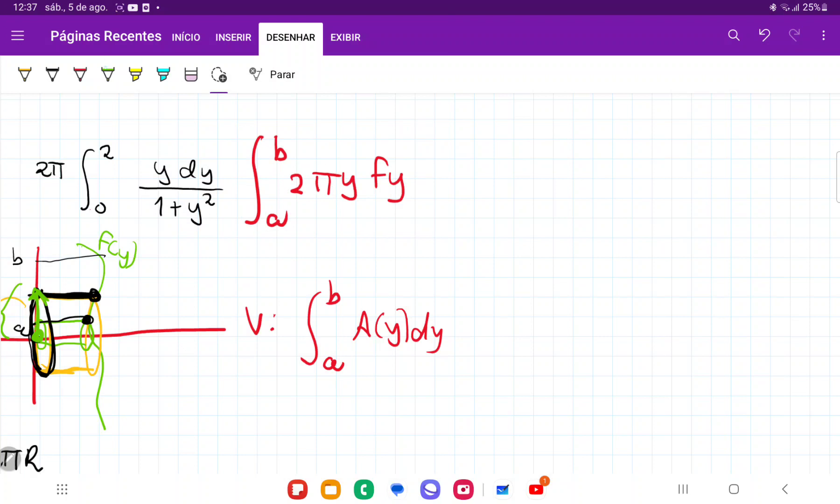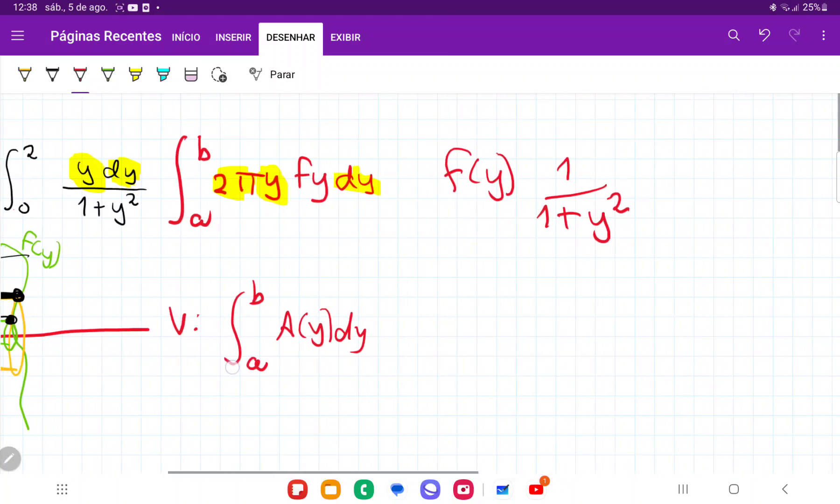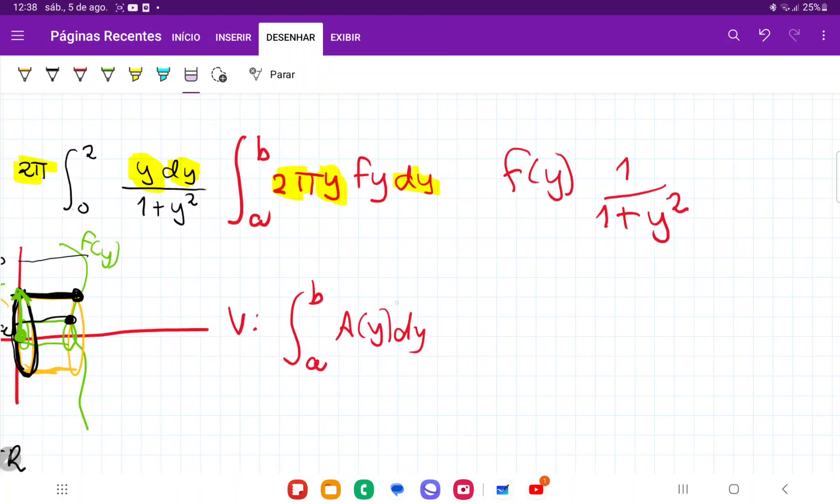So if we compare it, the 2π is accounted for. The y is also accounted for. I should have put a dy here. The dy is accounted for, and the only thing that's missing is the f(y). So from here, we can infer that f(y) must be the curve 1 over 1 plus y squared.